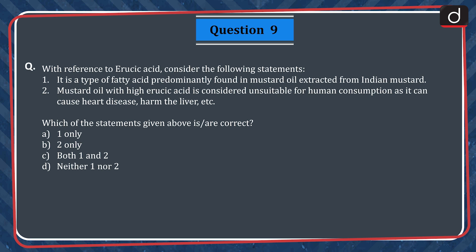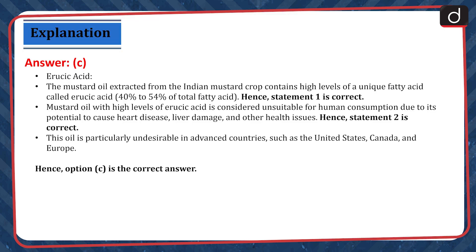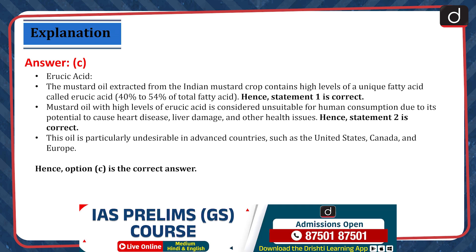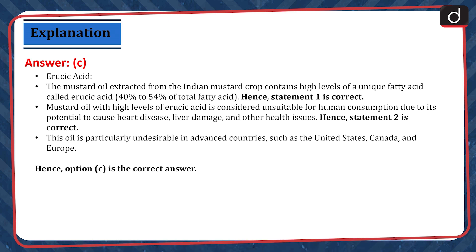A. One only. B. Two only. C. Both one and two. D. Neither one nor two. The correct answer is option C. The mustard oil extracted from the Indian mustard crop contains high levels of a unique fatty acid called erucic acid — 40% to 54% of total fatty acid. Hence, statement 1 is correct. Mustard oil with high levels of erucic acid is considered unsuitable for human consumption due to its potential to cause heart disease, liver damage and other health issues. Hence, statement 2 is correct. This oil is particularly undesirable in advanced countries such as the United States, Canada and Europe. Hence, option C is the correct answer.